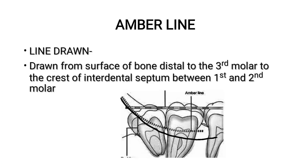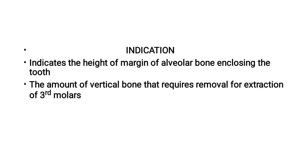The indication of the amber line is that it indicates the height of the margin of the alveolar bone enclosing the tooth, and the amount of vertical bone that requires removal for the extraction of the third molar.